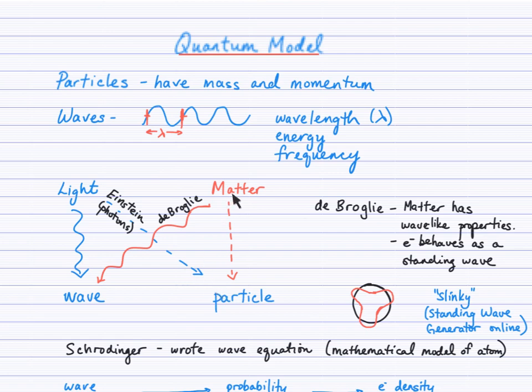Well, de Broglie then, Louis de Broglie, a French chemist, hypothesized that if matter is always thought of as a particle, perhaps matter also has wave-like properties. And so this is de Broglie's big contribution to the development of the atom, that matter has wave-like properties.